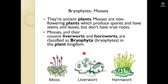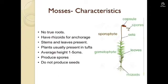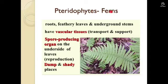These are the mosses. They are the non-flowering plants which produce spores — see, this will produce spores. Their relatives are liverworts and hornworts. Mosses have no true roots; they have rhizoids instead of roots, and their stems and leaves are present. Plants usually have tops and the average height is one to five centimeters.